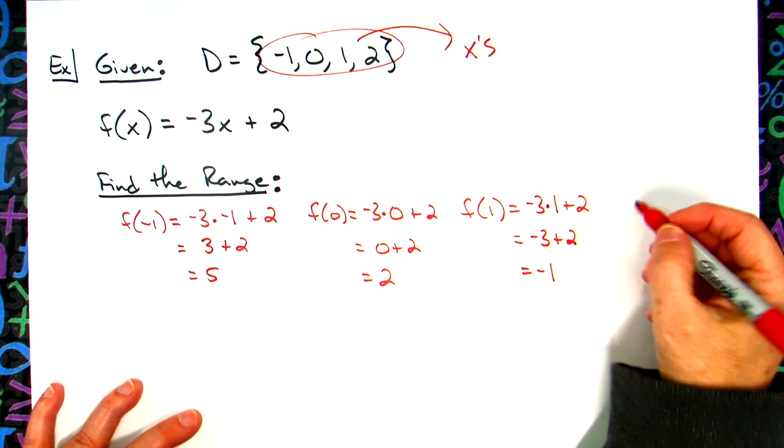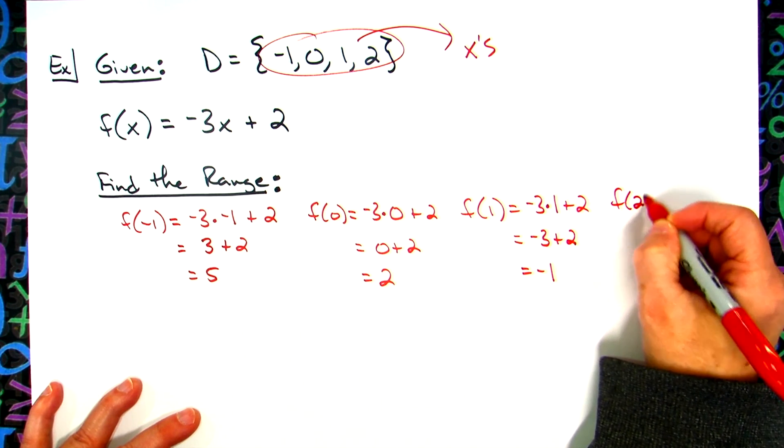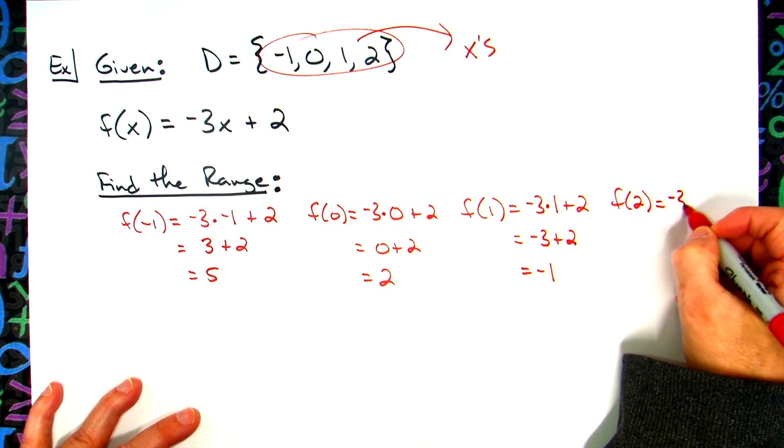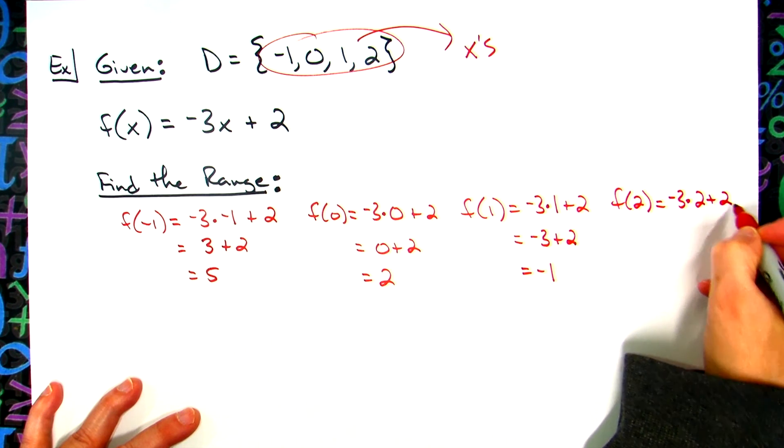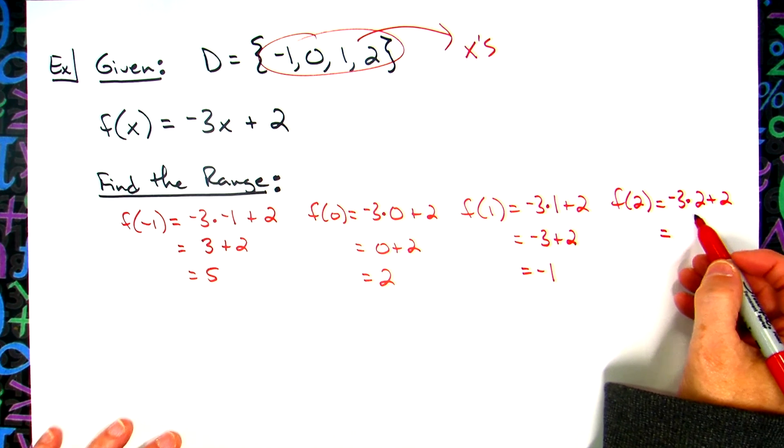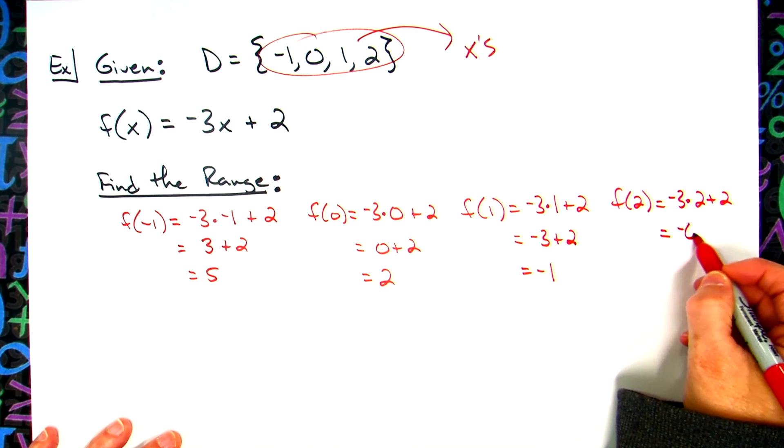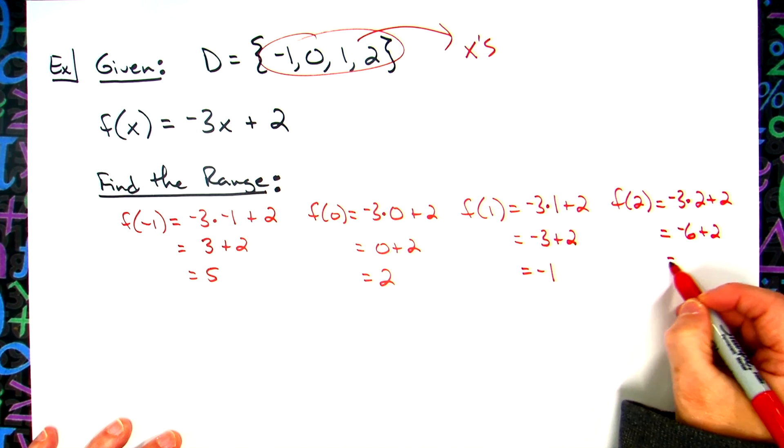And then I got one more to do, f(2). I'm going to plug that one in. Negative 3 times 2 plus 2 more. Negative 3 times 2 is negative 6. Plus 2 gives me negative 4.